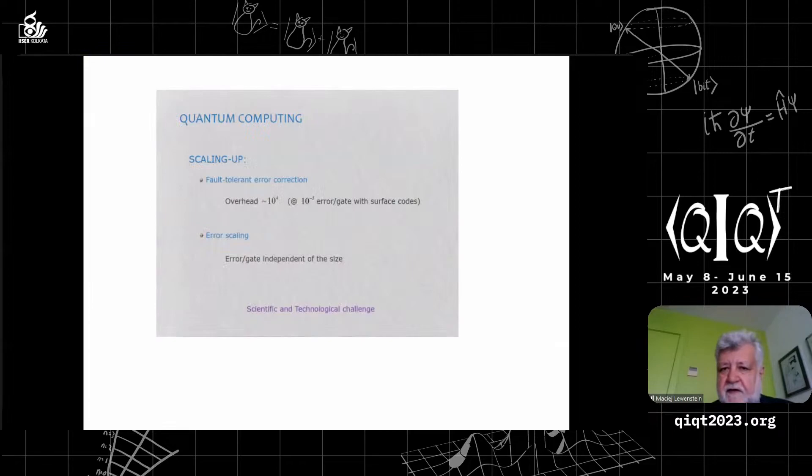The hype of quantum computing. The problem is that if you want to have a universal quantum computer that works without errors we need fault-tolerant error correction. The estimates say that if you want to have one logical qubit which works at sufficiently low level of errors, you need an overhead of roughly 10,000 qubits. So if you want a computer with 100 qubits you need 1,000,000 qubits to realize it with fault-tolerant error correction.